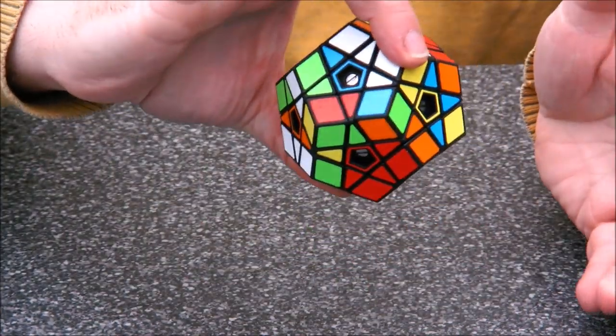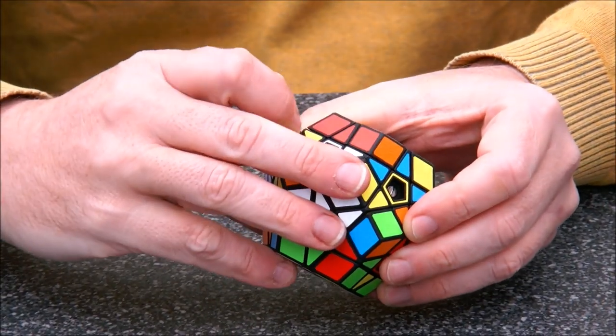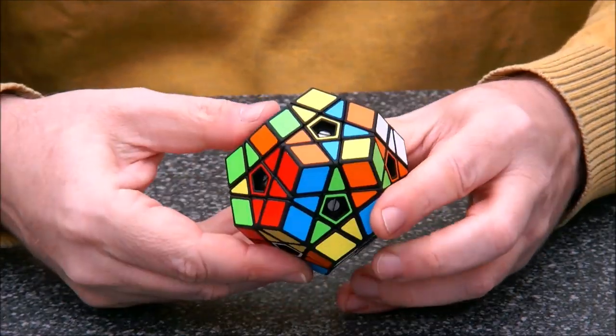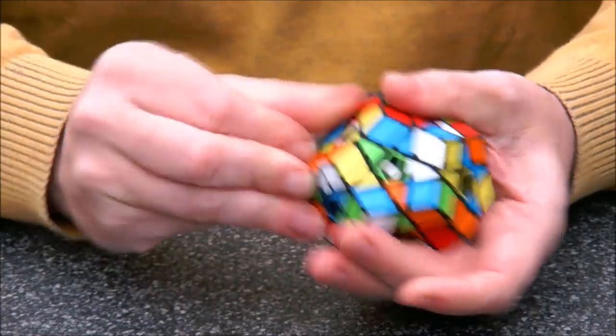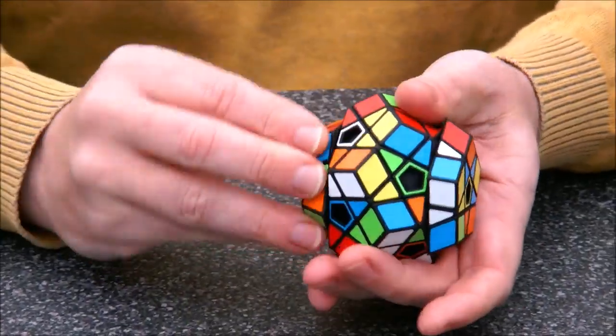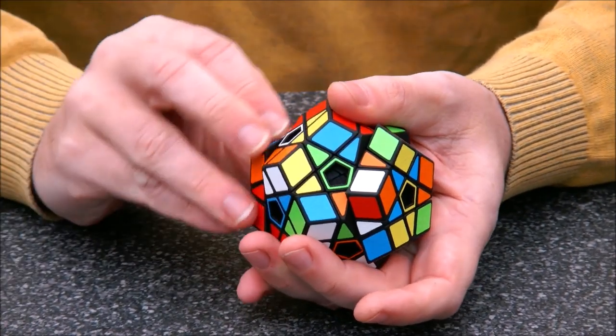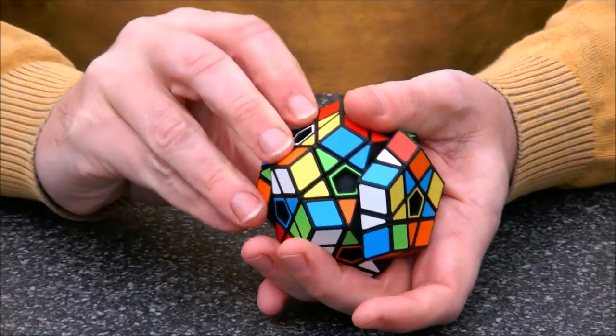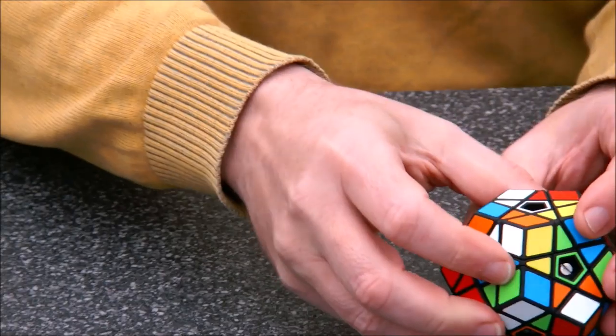So corners remain opposite to corners. So this white, yellow, blue one remains opposite to white, yellow, blue, etc. And as you can see, it turns really smoothly. And maybe you can see through the little holes in the pentagons that you can actually see the core passing by. And that's the trick how I designed this puzzle.